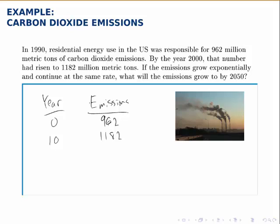With this information, we have enough to find the growth rate. Remember that the general exponential model looks like this: the amount in year t is the initial amount times (1 + r) raised to the power t.